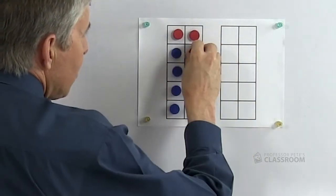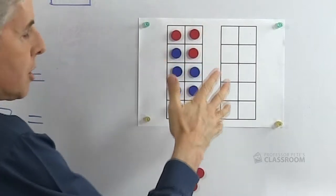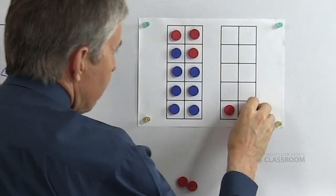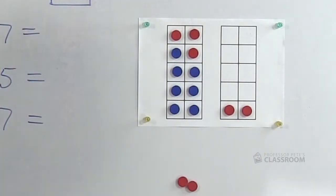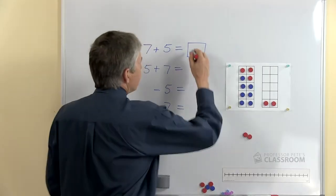First of all I'm going to fill in the first 10-frame with three, I'll need two more — there's four and five. What's my answer? Of course it's 12.